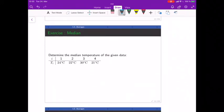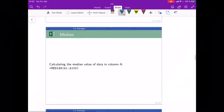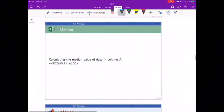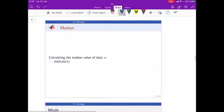Perfect, 23 degrees. We have to order: so 24, 21 is the smallest, then comes 22, 24. So it's the mean value of those two. Great. Median in Excel is median, in MATLAB also median. Easy.